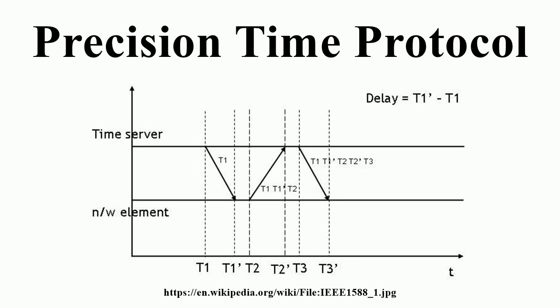IEEE 1588 is designed to fill a niche not well served by either of the two dominant protocols, NTP and GPS. IEEE 1588 is designed for local systems requiring accuracies beyond those attainable using NTP. It is also designed for applications that cannot bear the cost of a GPS receiver at each node, or for which GPS signals are inaccessible.